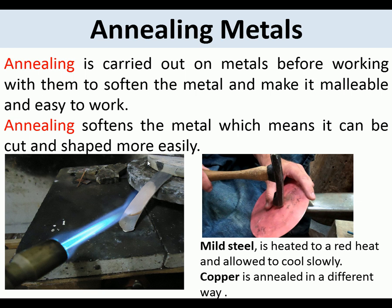Annealing is carried out on metals before working them, to soften the metal and make it malleable and easy to work. Annealing softens the metal so it can be cut and shaped more easily. Mild steel is heated to a red heat and allowed to cool slowly. Copper is annealed in a different way. So annealing — heating and allowing to cool slowly on steel — softens it, allowing it to be worked more easily.